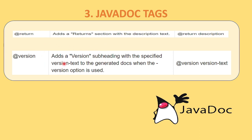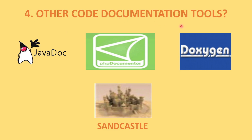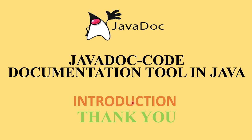These are some of the main Javadoc tags which are normally used when we write Java code and generate Javadoc for that code. Now we will see other code documentation tools available. We have PHP Documenter, which is used for generating documentation for PHP code. Similarly, we have Sandcastle, which is used for generating documentation for .NET code. Doxygen is normally used for C++ code — it generates documentation for C++ code you have written. Every programming language has its own code documentation tool. We have seen the Javadoc introduction and will see the implementation in the next video. This was all about the Javadoc code documentation tool introduction. Thank you.